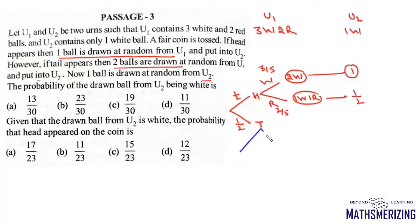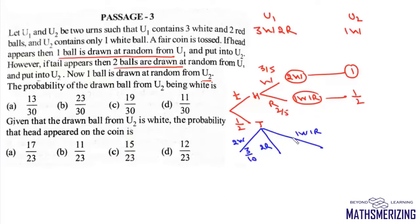If the coin results in tail then we have 3 choices: either the transferred balls will be 2 white, 2 red, or 1 white and 1 red. The probability of choosing 2 white will be 3C2 / 5C2 = 3/10. For 2 red: 2C2 / 5C2 = 1/10. For 1 white and 1 red: 3C1 × 2C1 / 5C2 = 6/10. If 2 white are transferred, U2 will have 3 white; if 2 red, it will have 1 white and 2 red; if 1 white and 1 red, it will have 2 white and 1 red.